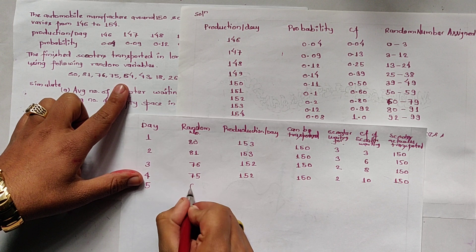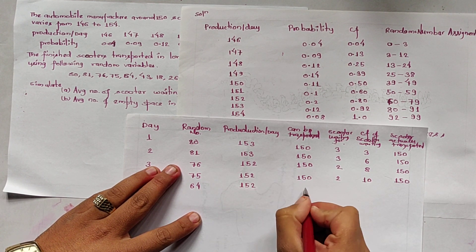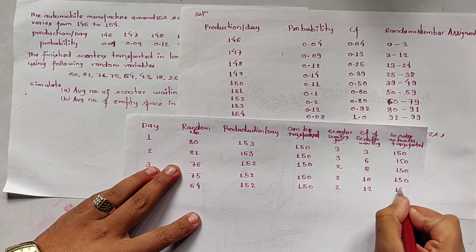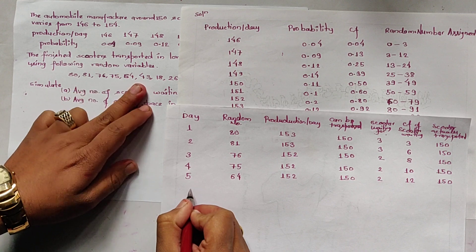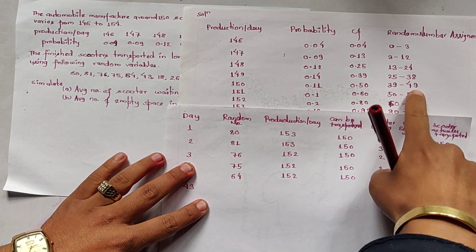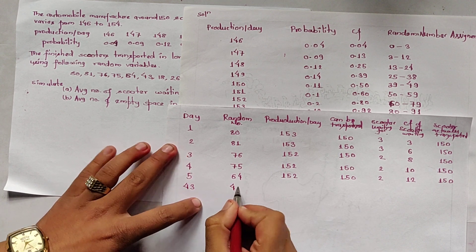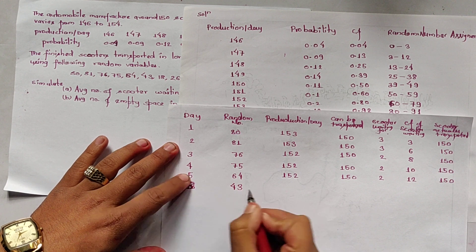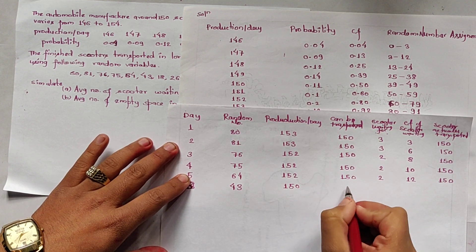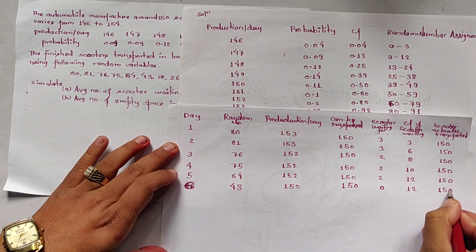Day 5: random number is 64. 64 lies in the range 60 to 79, so production is again 152. 150 is transported, remaining 2 are waiting, cumulative waiting is 12, actually transported is 150. Day 6: random number is 43. 43 lies in the range 39 to 49, so production is 150. 150 can be transferred, no waiting, cumulative waiting remains 12, actually transported is 150.